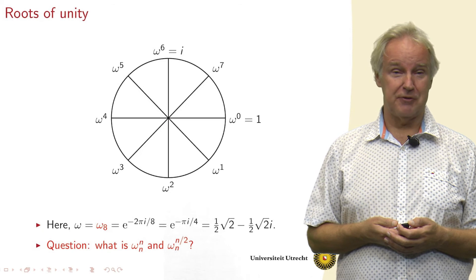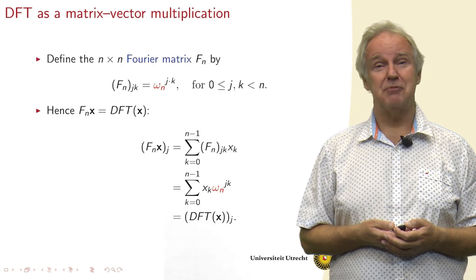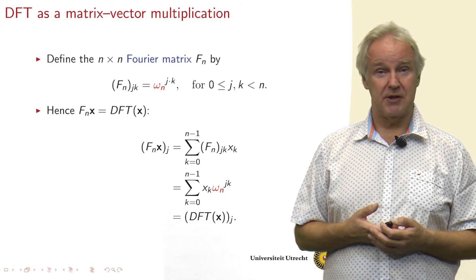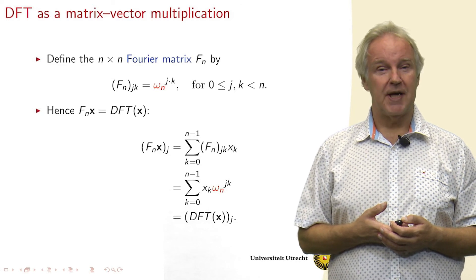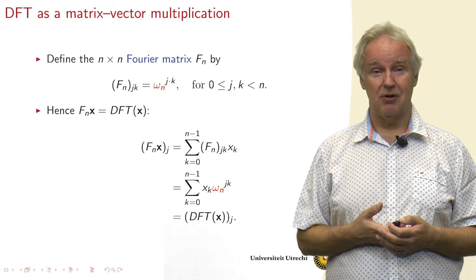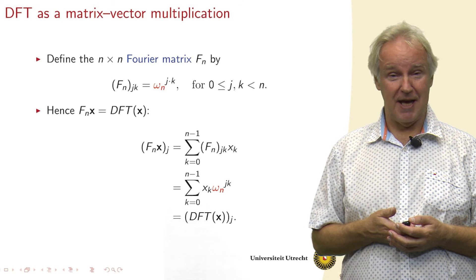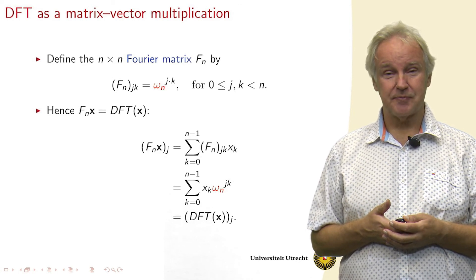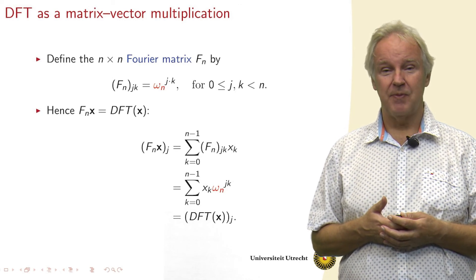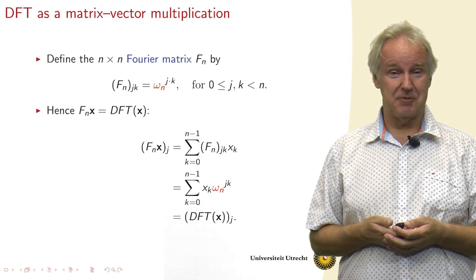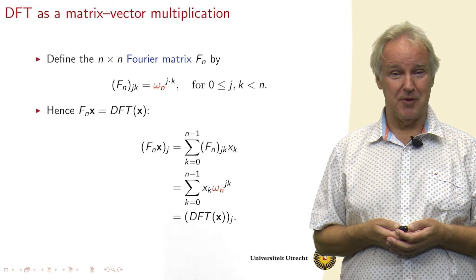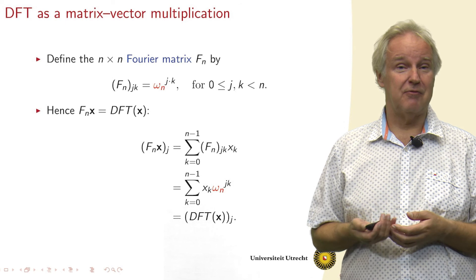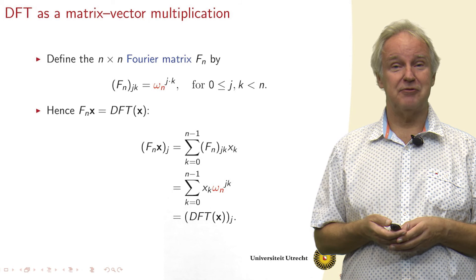We would like to express the discrete Fourier transform in terms of linear algebra, in terms of a matrix computation. And we can do that by defining the Fourier matrix Fn, where in row j and column k, we have the power j times k of omega n. So now if we multiply Fn with the vector x, then we get a sum from k equals 0 to n minus 1 of Fn at position jk times xk. And this turns out to be exactly the definition of the discrete Fourier transform.